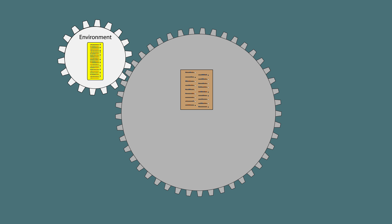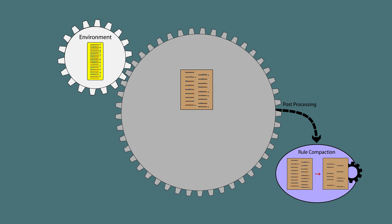However, there is often a post-processing step applied to the rule population after training. This is known as rule compaction, or in some cases, condensation. A number of rule compaction strategies have been proposed, but they all typically seek to remove poor, redundant, or inexperienced rules from the population. Ultimately, rule compaction simplifies the rule population model, improves interpretability, and can even improve predictive performance.